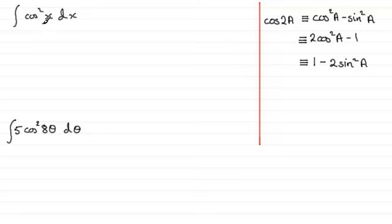Now for this type of integral where we've got to integrate a term that contains cos squared of an angle we turn to 2 cos squared a minus 1. So I'm going to just call that identity number 1 and what we do is we make cos squared a the subject.